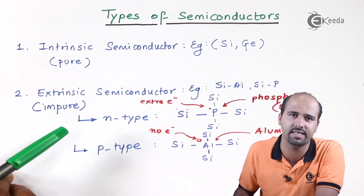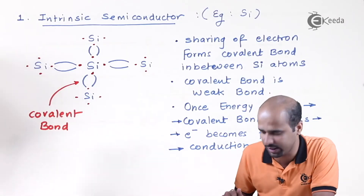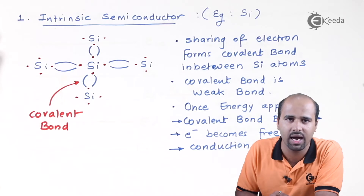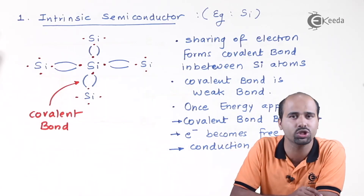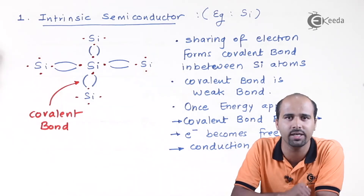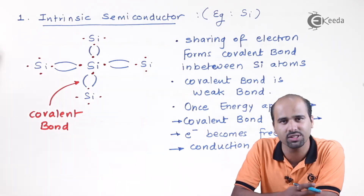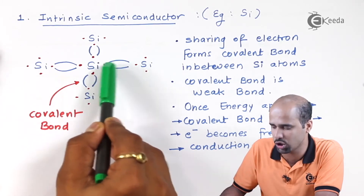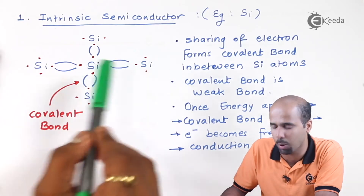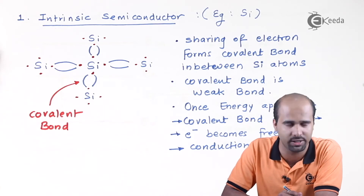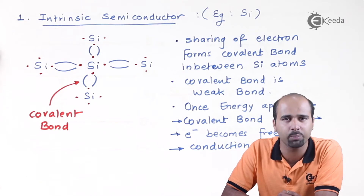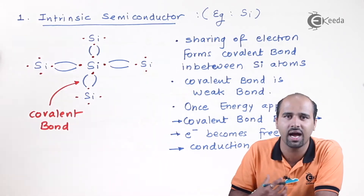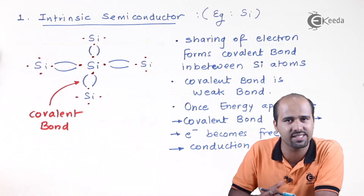Let's focus in more detail on intrinsic semiconductors. In an intrinsic semiconductor, all silicon atoms and their neighboring atoms have four electrons in their outermost orbit. Silicon atoms are confused whether to lose or gain electrons to complete their octet, so they do sharing — forming covalent bonds between neighboring atoms. You have studied in chemistry that covalent bonds are weak bonds. All silicon atoms share electrons with their neighbors, and whatever bond gets developed is called a covalent bond.